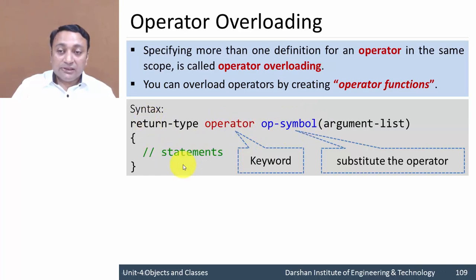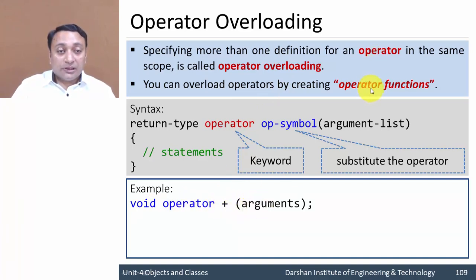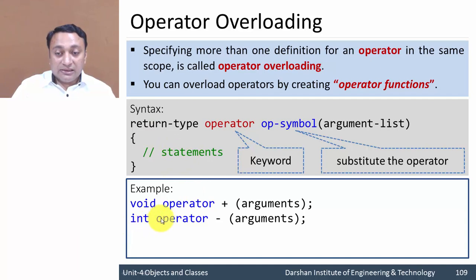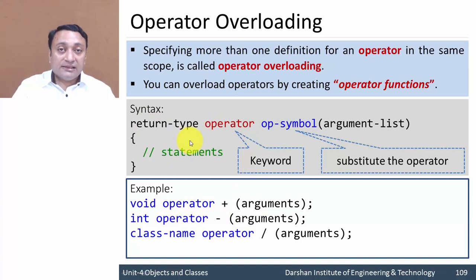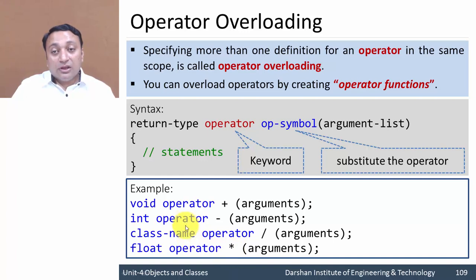Let us see a few examples of this syntax. Suppose I want to overload the plus operator — return type is void, then the operator keyword, then the plus symbol, and arguments. If the operator function returns an integer value, the return type is integer, then operator keyword, the symbol, and arguments. If the operator function returns an object — and an object is always of a class type — you write the class name as the return type, then the operator keyword, operator symbol, and arguments. Same way, we can return float values as well.